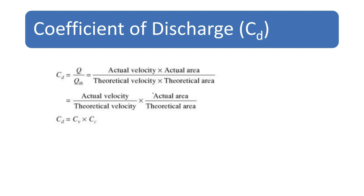Coefficient of discharge CD is equal to the actual discharge divided by the theoretical discharge. Actual discharge is equal to actual velocity multiplied by actual area, and theoretical discharge is equal to theoretical velocity multiplied by theoretical area. This can be written as actual velocity divided by theoretical velocity, multiplied by actual area divided by theoretical area — which equals CV multiplied by CC. So the formula connecting all hydraulic coefficients is: coefficient of discharge equals coefficient of velocity multiplied by coefficient of contraction.